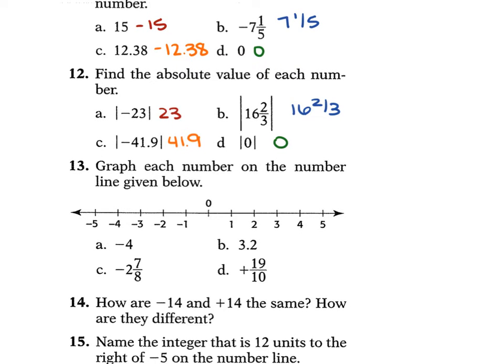For 13, we're graphing each number on the number line given below. For a, we have negative 4, so negative 4 is here. For b, we have 3.2, which is just to the right of 3 on the number line. For c, we have negative 2 and 7/8, which is going to be very close to negative 3. And then positive 19/10 is the same thing as 1 and 9/10, so that's going to be very close to 2.